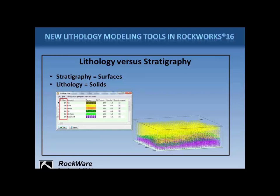The numeric value assigned to the nodes is based on the values defined in the lithology types table. The colors used to represent the materials are the background colors defined for the patterns in that table. Note that the output is not a gradational model of these G values like a geochemistry model would be. Instead, the lithology modeling routines maintain the G values — one for soil, two for sand, etc.